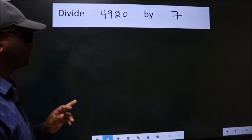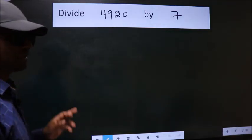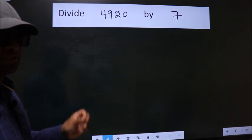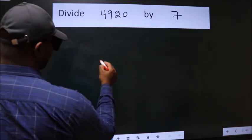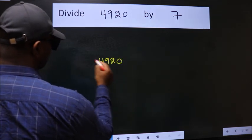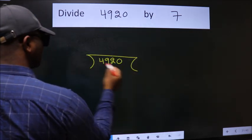Divide 4920 by 7. To do this division, we should frame it in this way. 4920 here, 7 here.